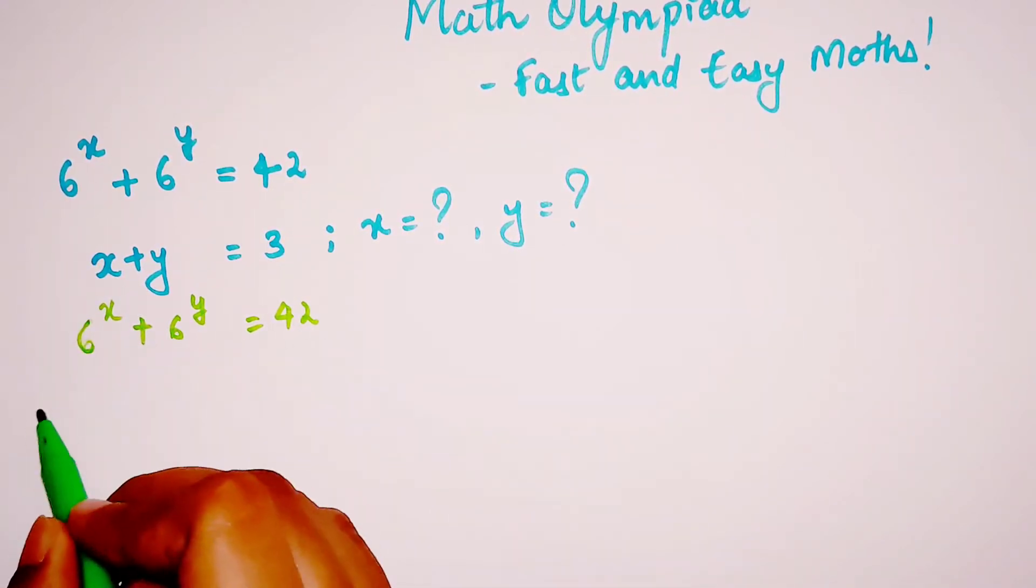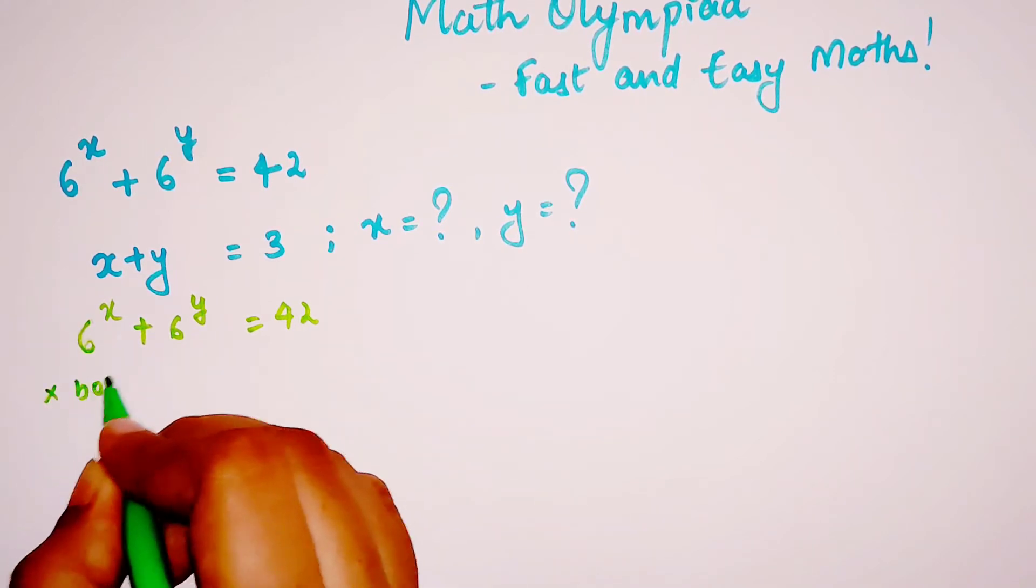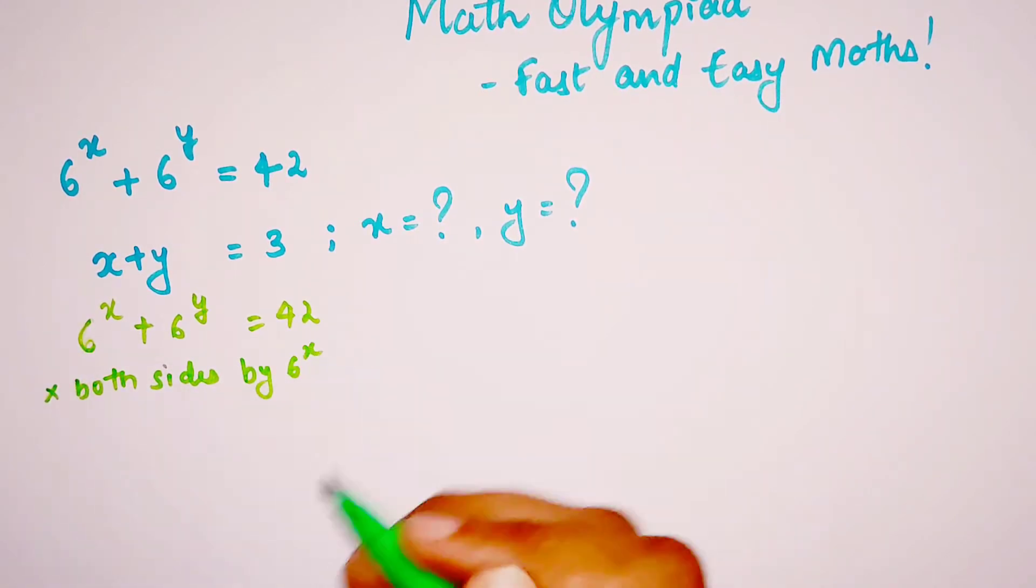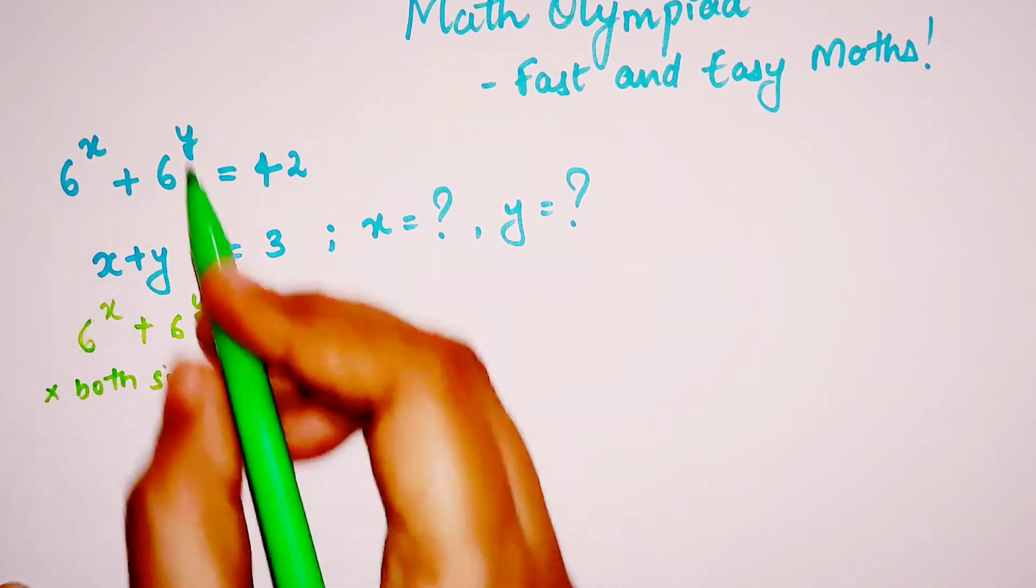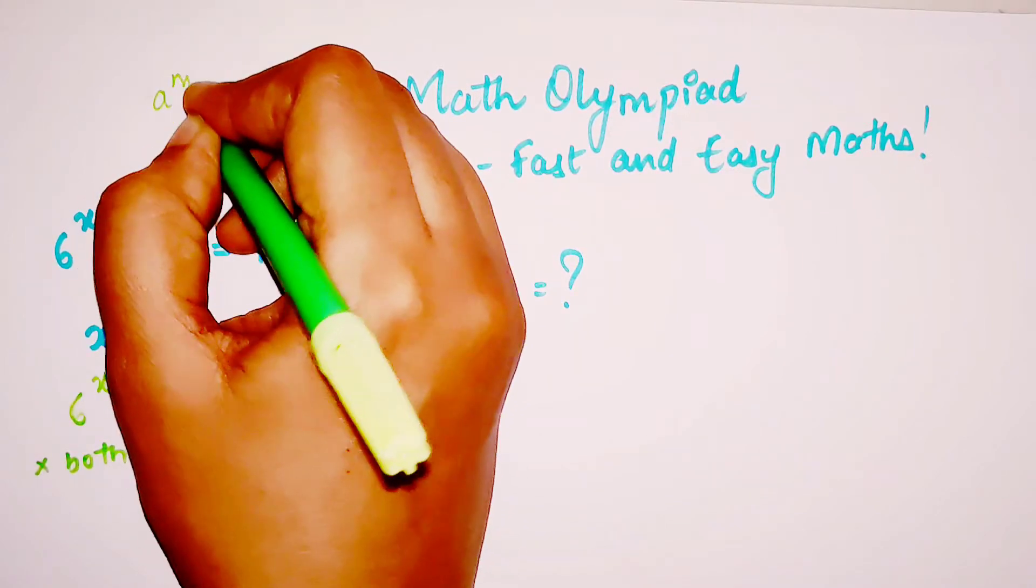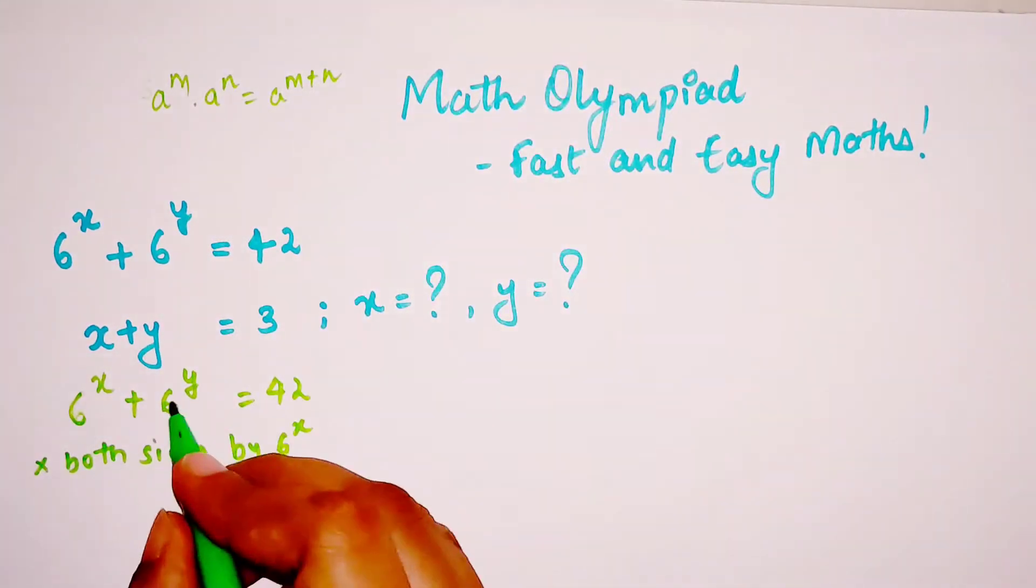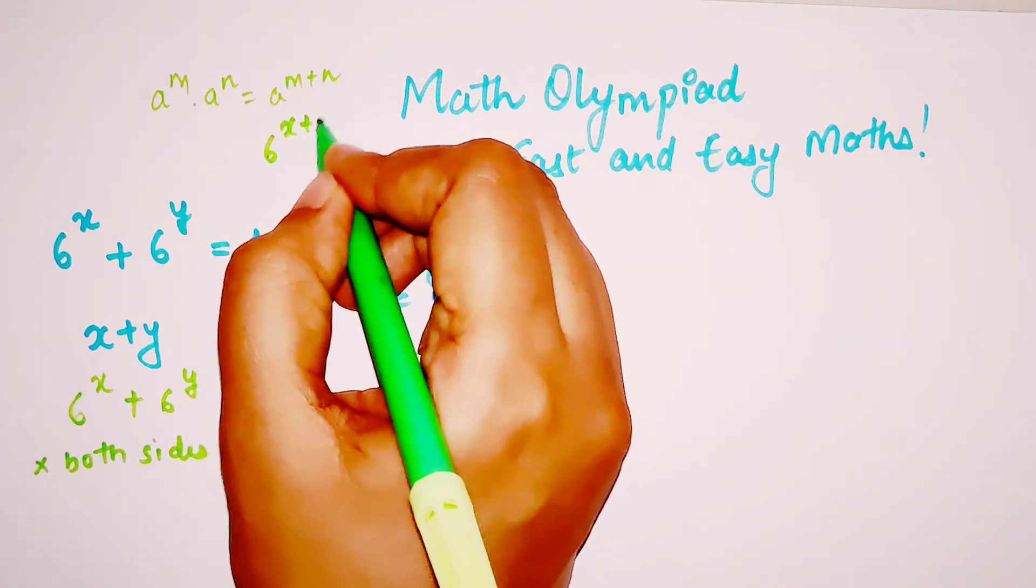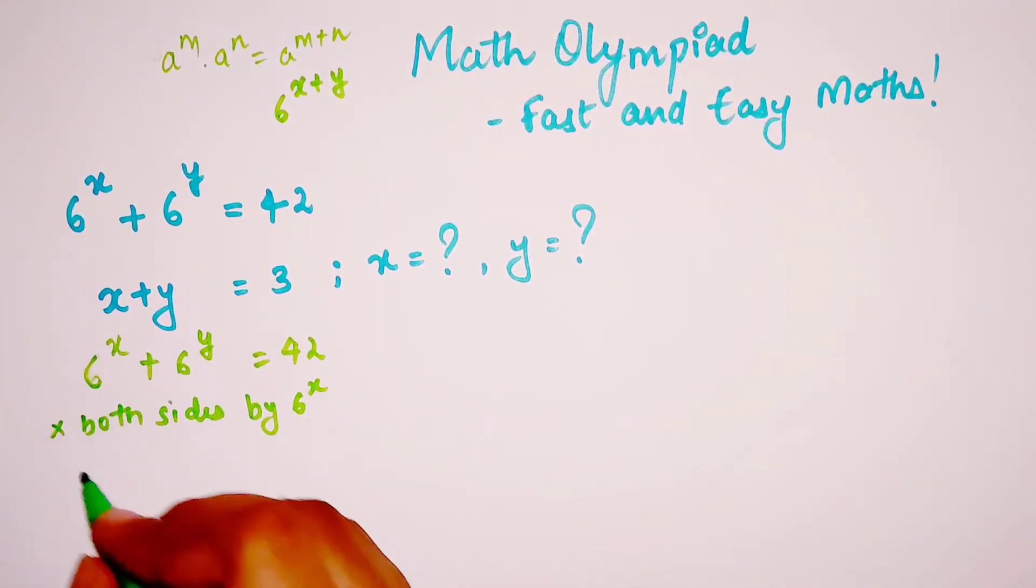If I multiply both sides by 6^x, when you multiply a^m by a^n, you get a^(m+n). So 6^x times 6^y gives 6^(x+y), and x+y is given as 3, so we don't have to worry about that.